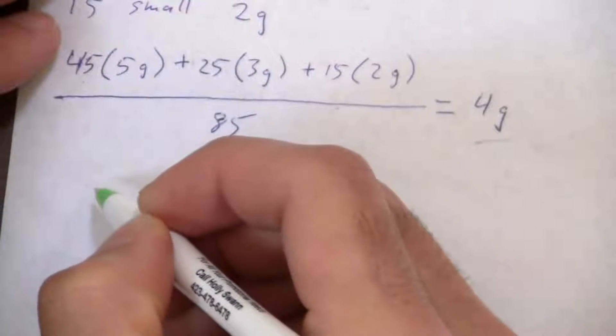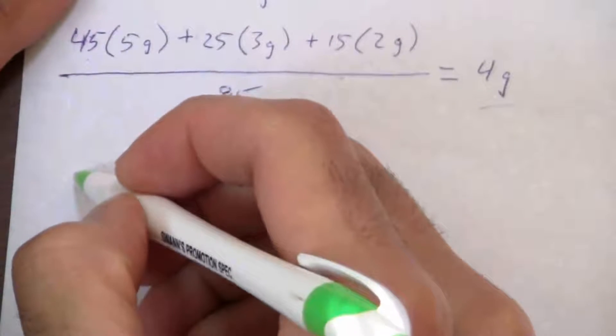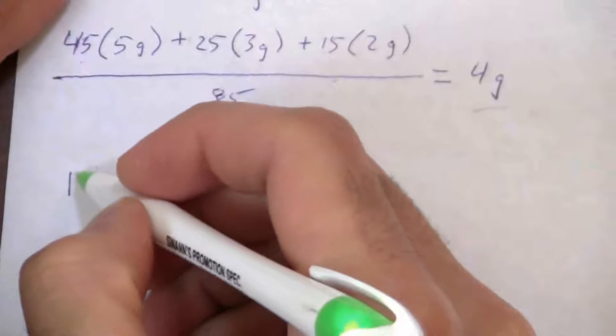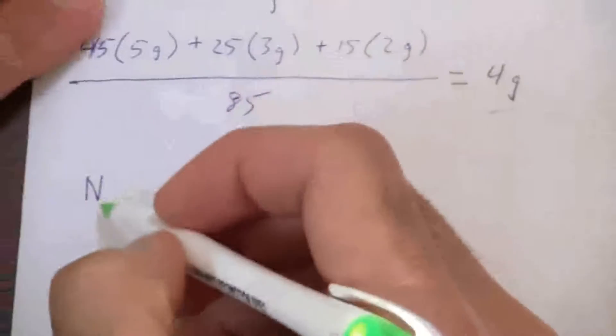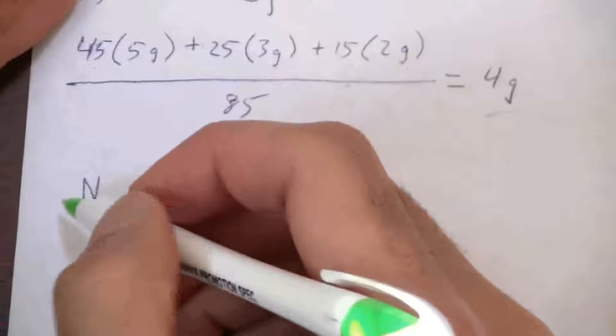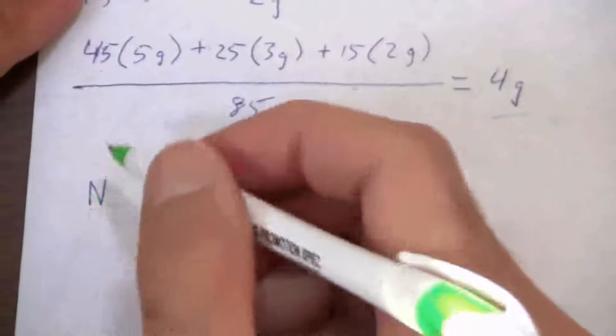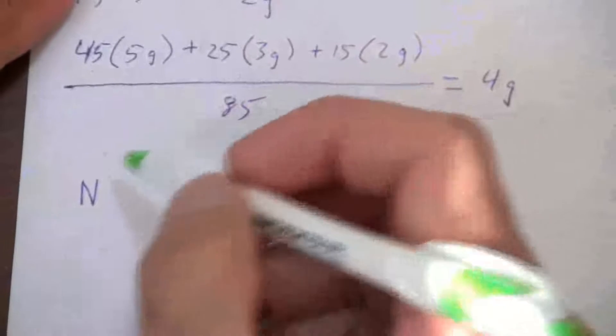For example, nitrogen has two isotopes. An isotope is an atom that has a specific number of protons and neutrons.